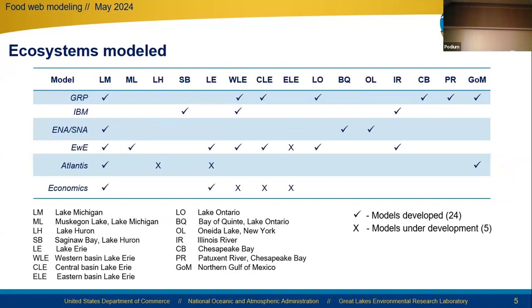Each of these modeling approaches has also been applied across many different ecosystems and habitats. These have ranged across four of the five Great Lakes — Lake Michigan, Lake Huron, Lake Erie, and Lake Ontario — as well as different sections and habitats including Muskegon Lake, Saginaw Bay, Western, Central, and Eastern basins of Lake Erie, and the Bay of Quinte, Lake Ontario. Models have also been developed and applied for other ecosystems including the Illinois River, Oneida Lake, Chesapeake Bay, Patuxent River, and the Northern Gulf of Mexico.